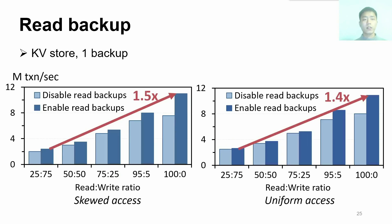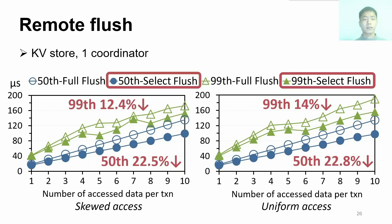We use KiwiStore to evaluate our backup-enabled read scheme. The results show that by opening backups to serve read-only data, FORD improves throughput as the read ratio increases. Moreover, we examine our selective remote flush scheme. The results show that selective flush mitigates 50th and 99th percentile latencies due to consuming fewer flush round trips than the full-flush scheme.